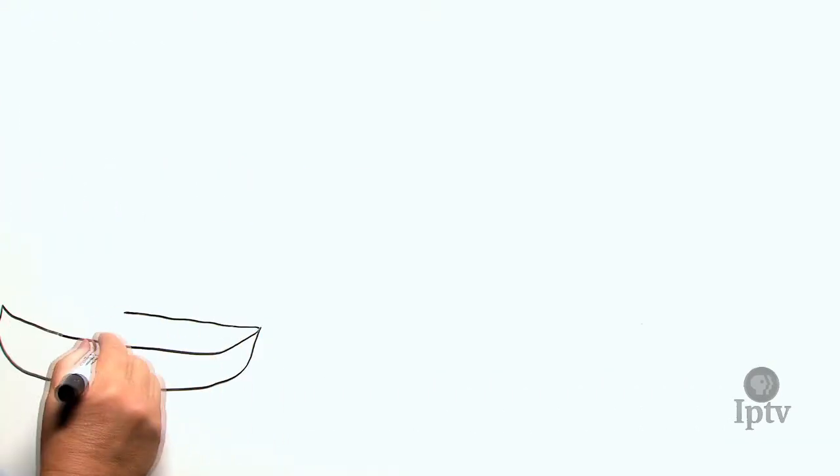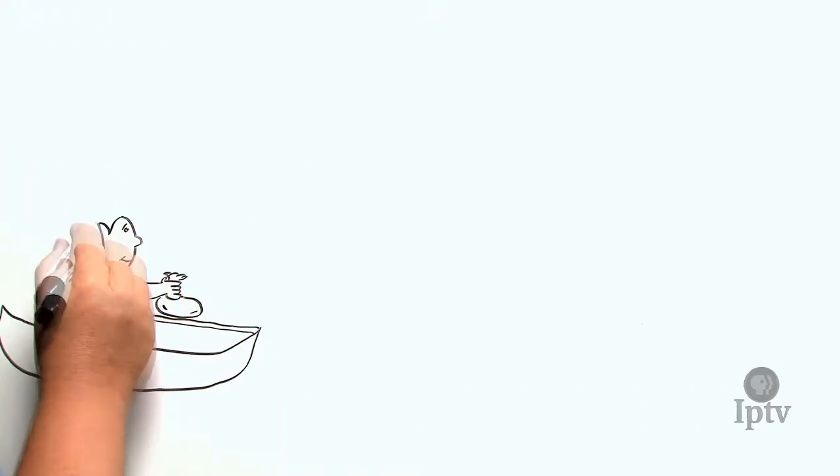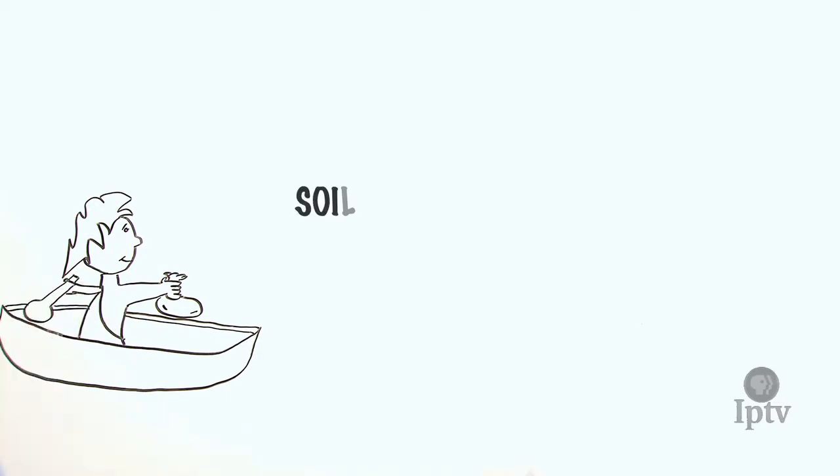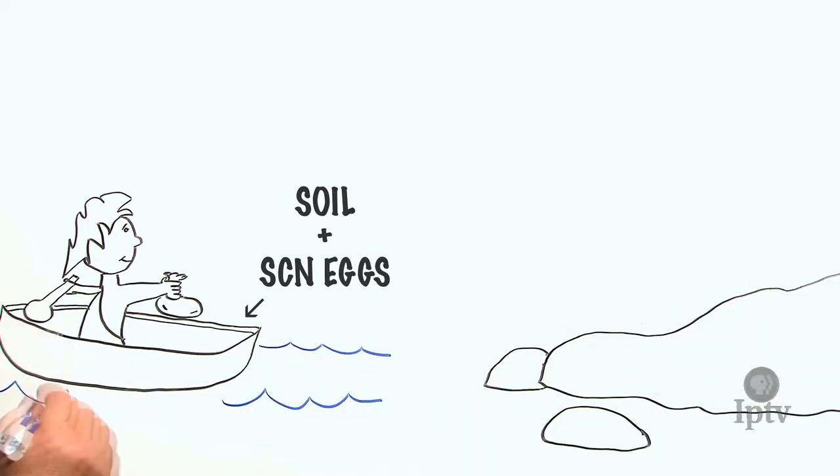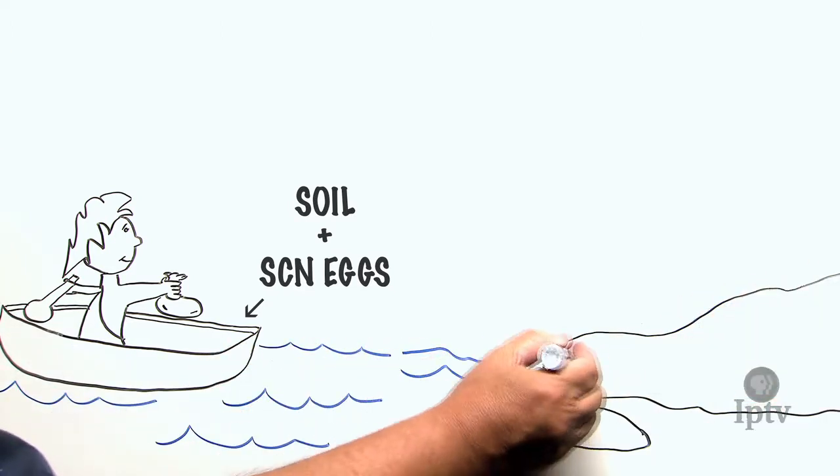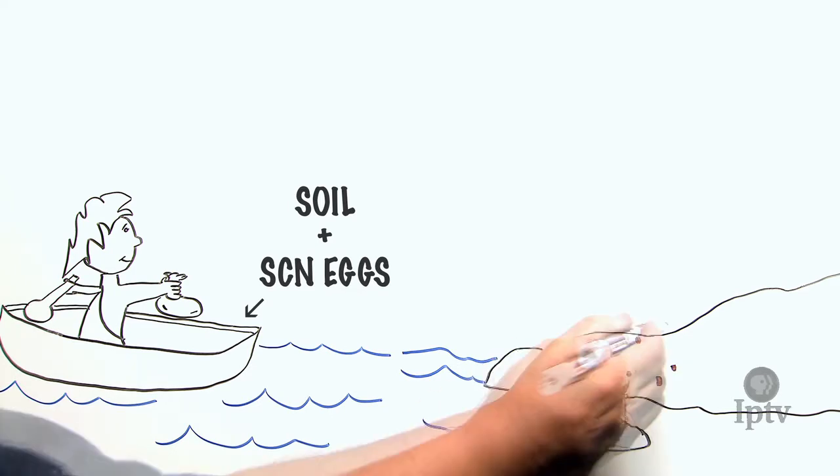But with the advent of modern machinery and global travel, it didn't take the SCN long to catch up. The eggs of the SCN can survive a decade in soil. It's possible that soil containing the eggs of the SCN was carried from one location to another, allowing the parasite to spread into new soybean fields.